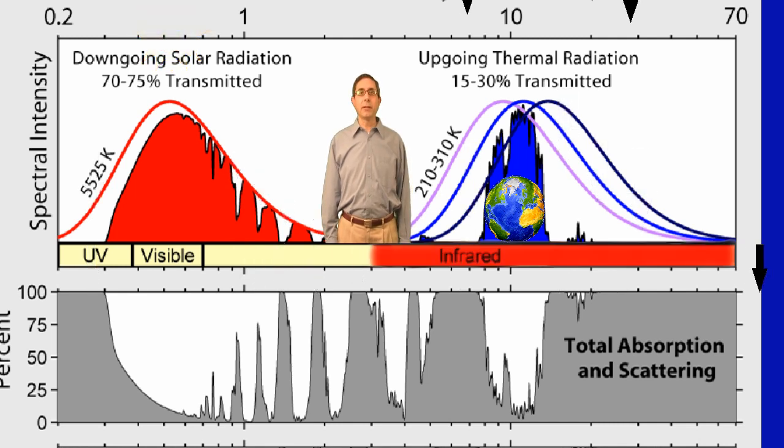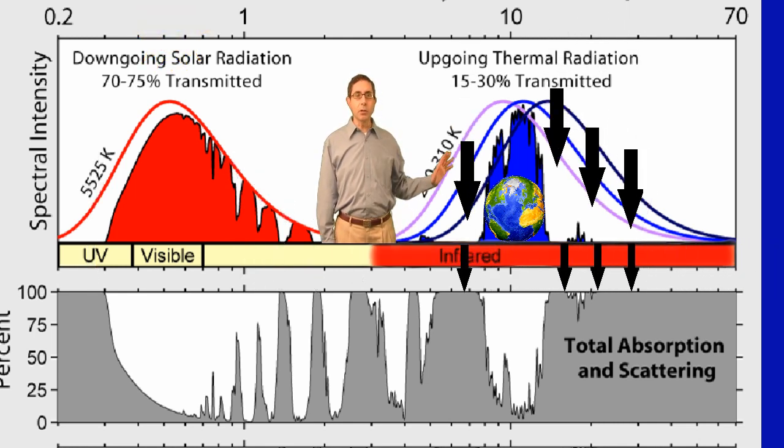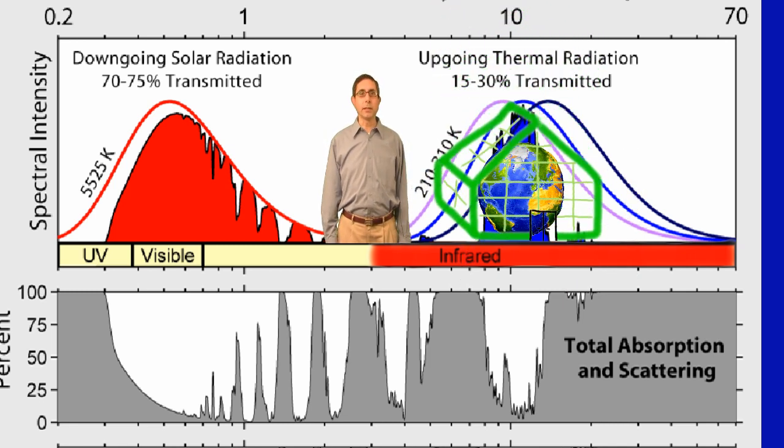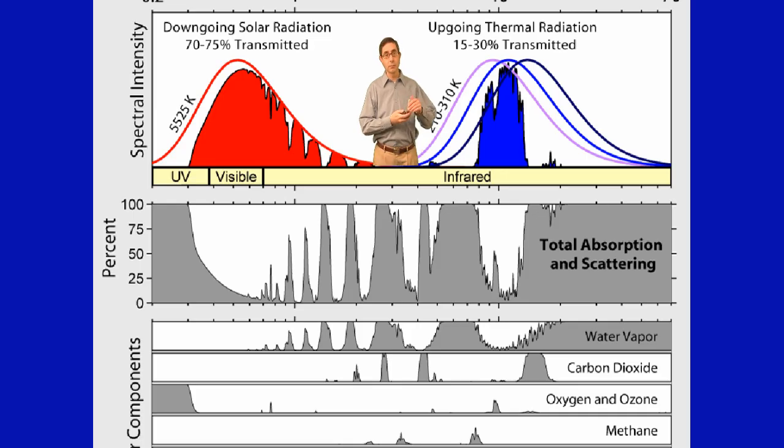This absorption and scattering take place mostly in the outgoing longwave radiation from the Earth. The absorbed energy is what causes greenhouse warming. Now let's compare the absorbing gases. Beam me down, Scotty.